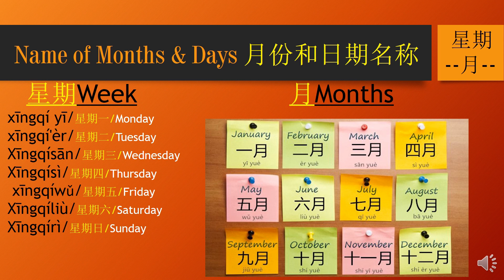星期四, 星期四 — Thursday. 星期五, 星期五 — Friday. 星期六, 星期六 — Saturday. 星期日, 星期日 — Sunday.